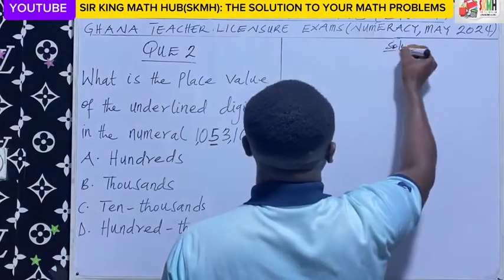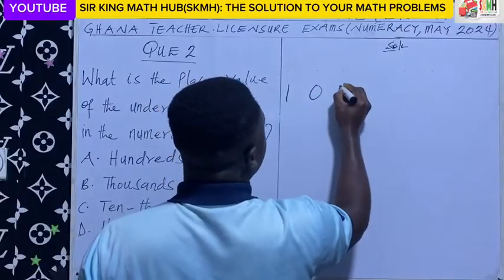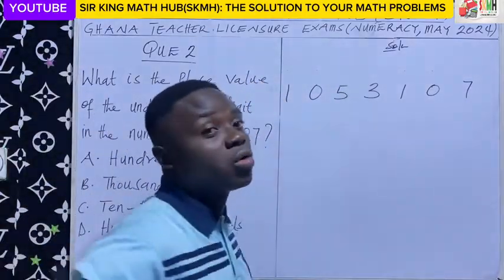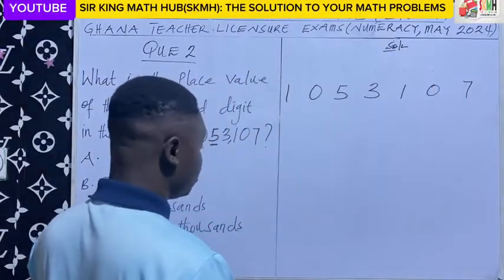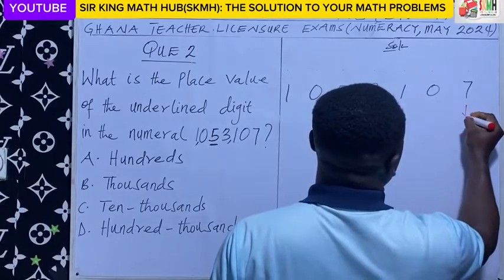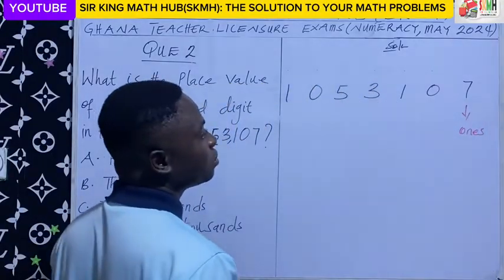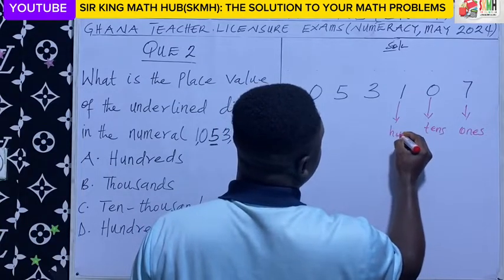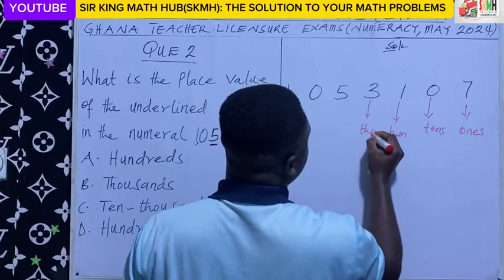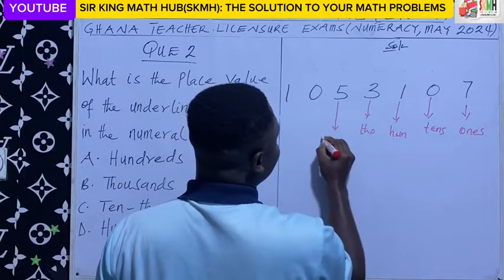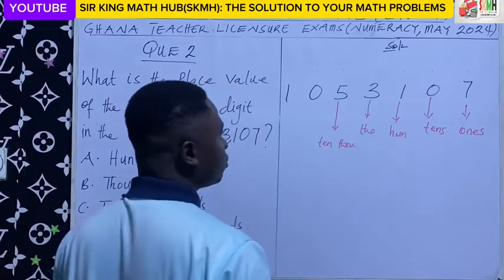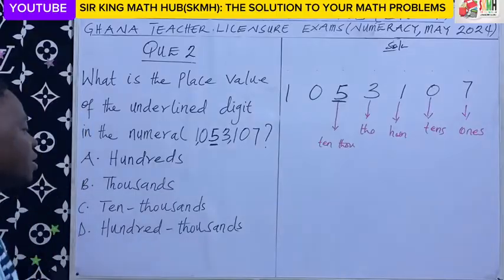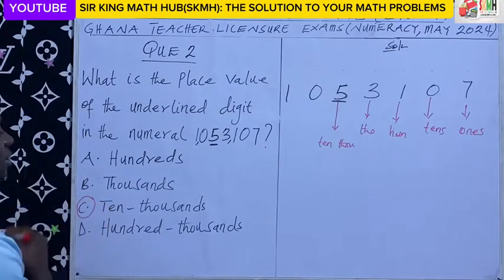Let me write the numeral here. Each digit has its own place value. Starting from the far right and moving towards the left: 7 is at the 1's column, 0 is at the 10's column, 1 is at the 100's column, 3 is at the 1,000's column, and 5 is placed at the 10,000's column. So the right answer is C: 10,000.